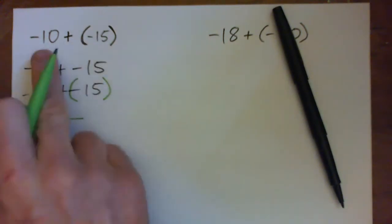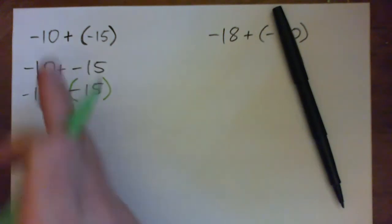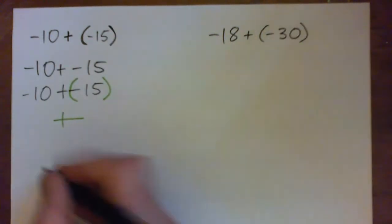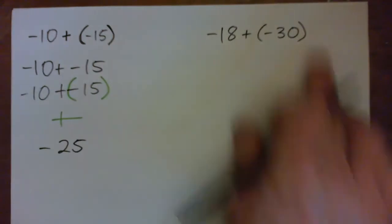So this is just negative 10 plus negative 15. A debt of $10 and a debt of $15 is a debt of $25. And you're just adding. Same with this one.